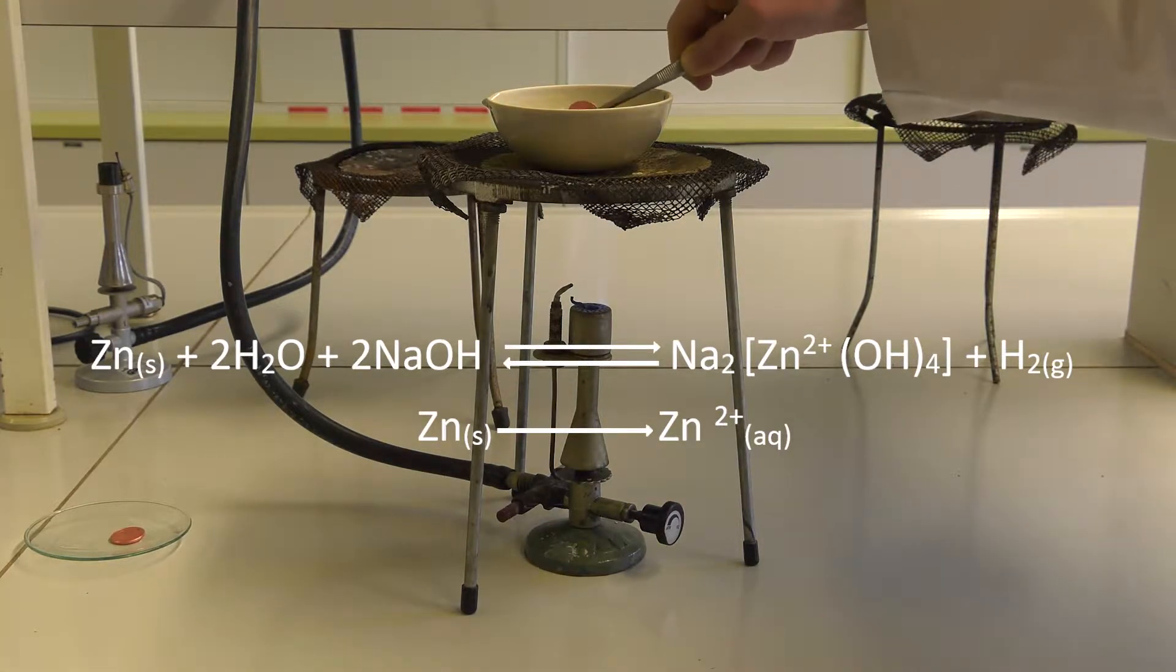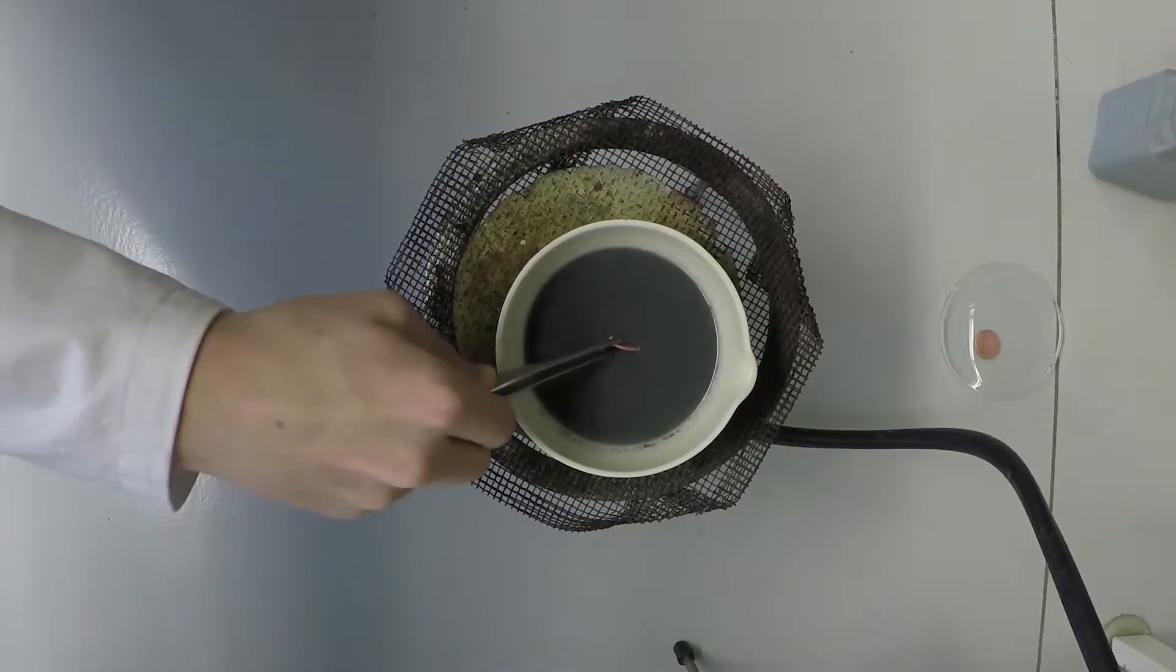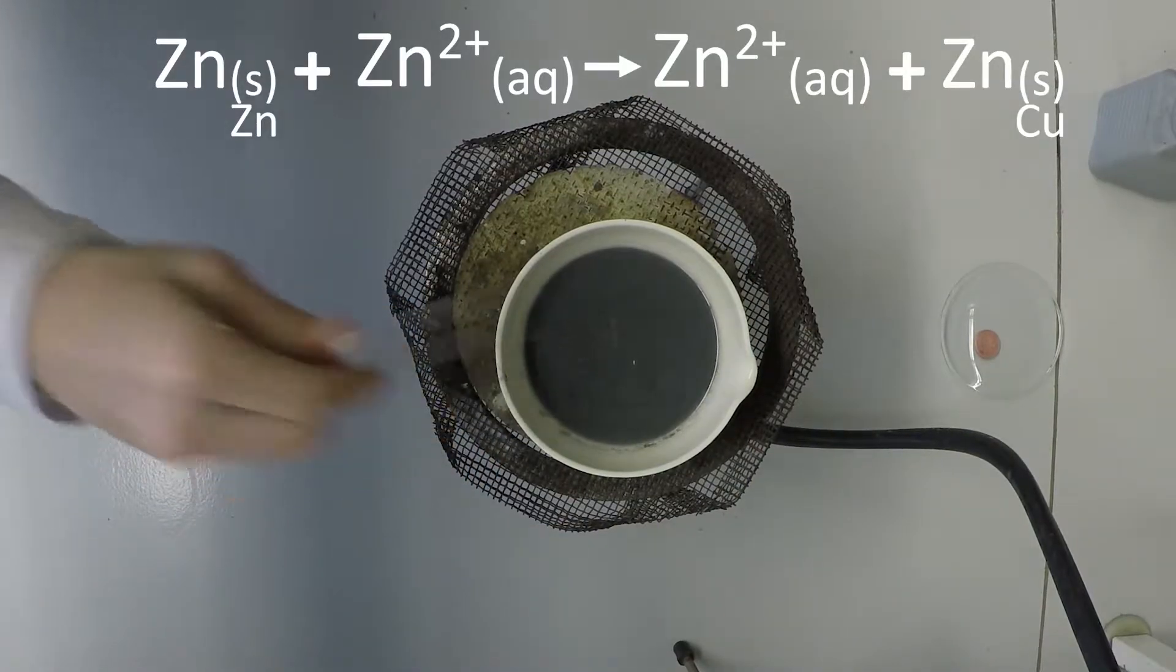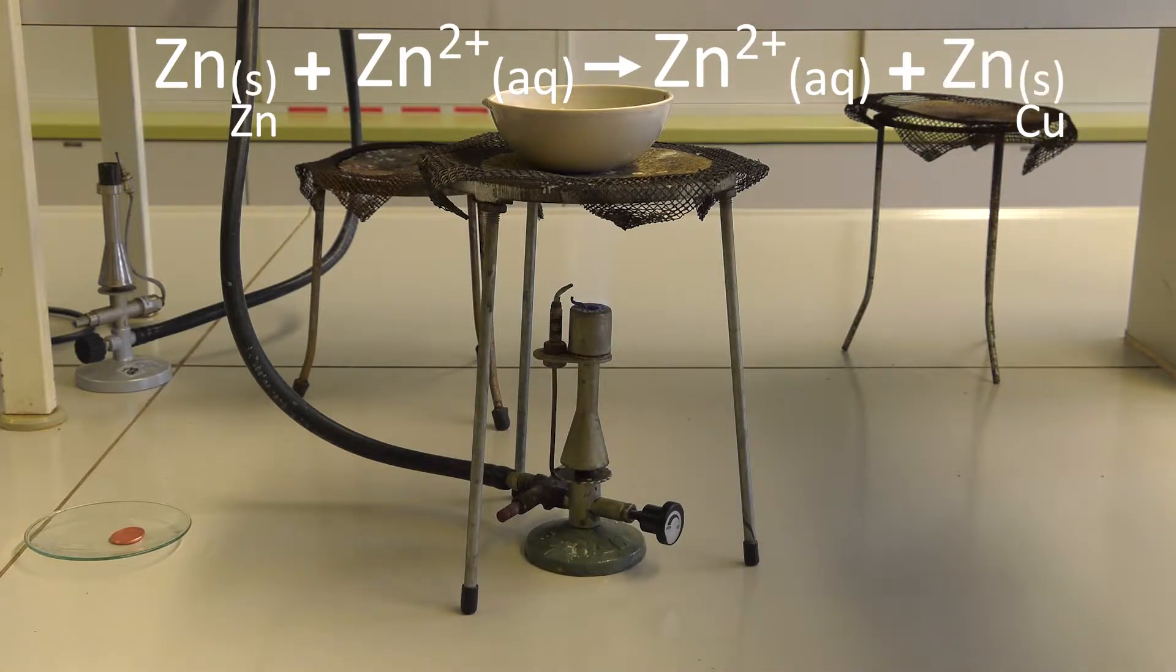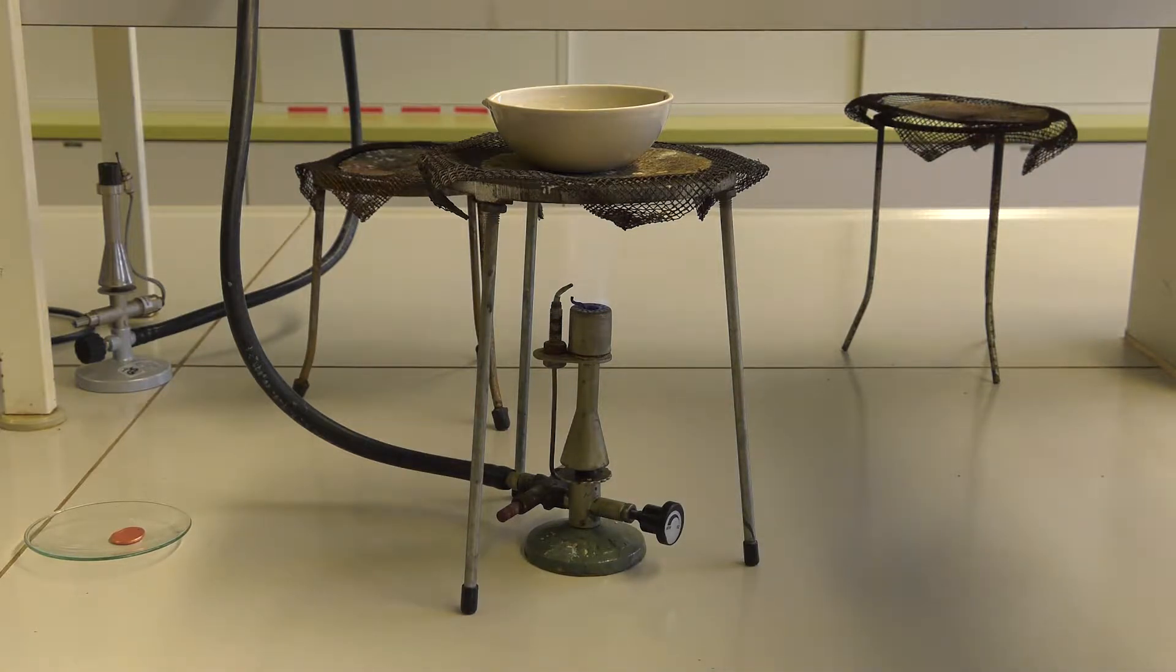Insert the copper coin using tongs into the suspension. After 30 seconds, the coin is coated in a silver colored layer.